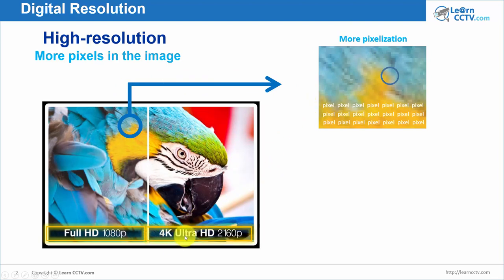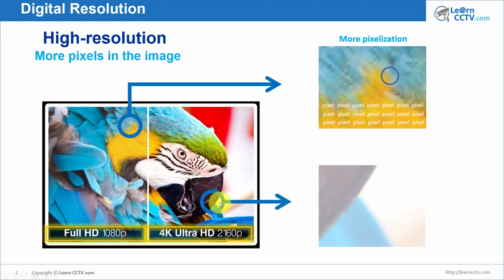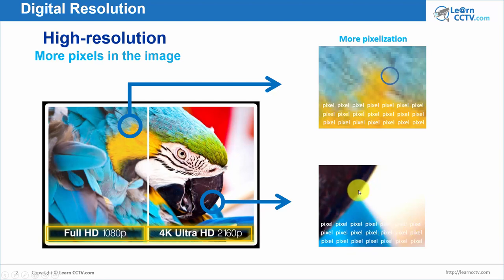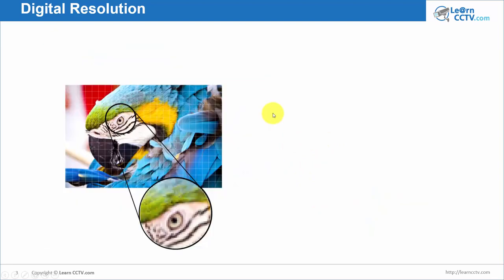On this side I have 4K or Ultra HD resolution. If I do the same and take part of the image, I can see a lot of pixels here, but compared to the other one, I have less pixelization — because I have more pixels in this image. And I use this concept for digital zoom: when I want to have digital zoom, more pixels is better.